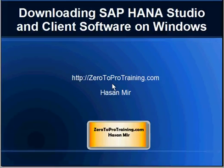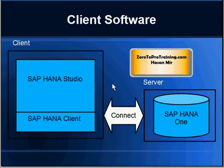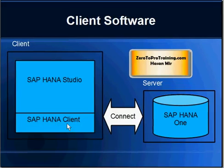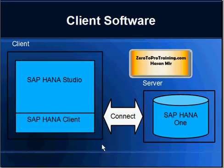Hello, in this session we will talk about downloading SAP HANA Studio and the client software on Windows platform. This is Hassan Mead from zerotroprotraining.com. We will be using SAP HANA Studio as our main software on our client computer to interact with the HANA database — writing SQL, doing modeling. In order to communicate to the database, SAP HANA Studio needs SAP HANA client software, which makes JDBC and ODBC connections with the database. That is how you see results from the database back in Studio, and how you pass queries from Studio to the database.